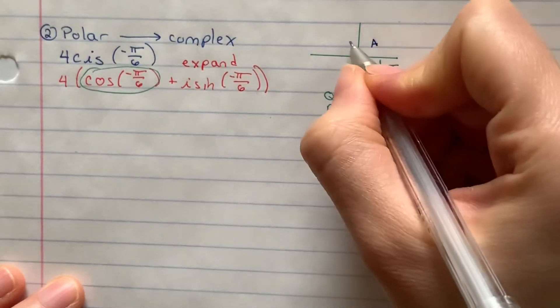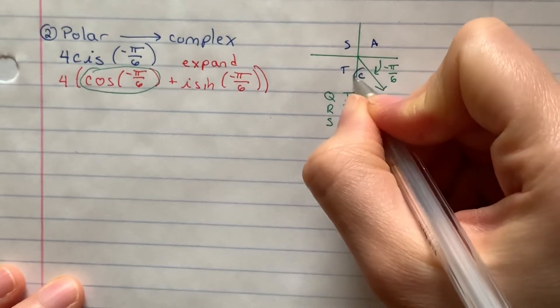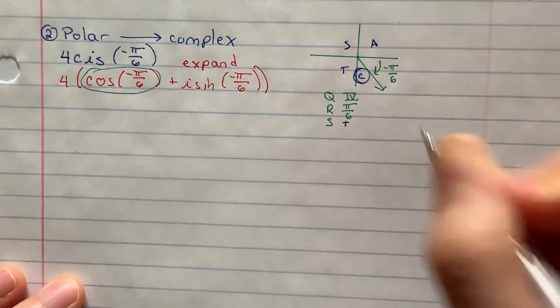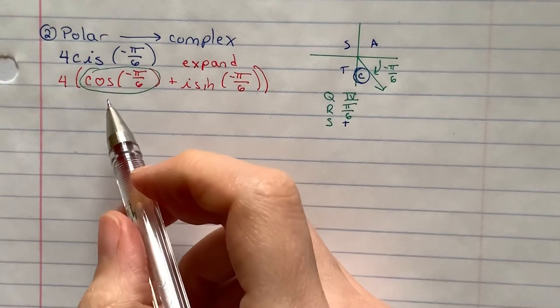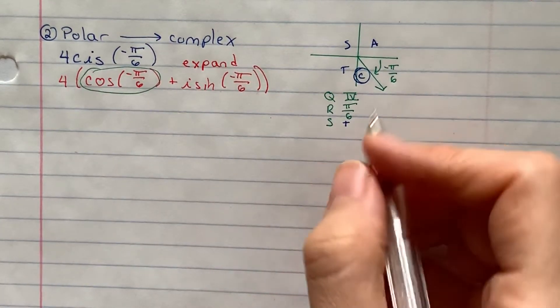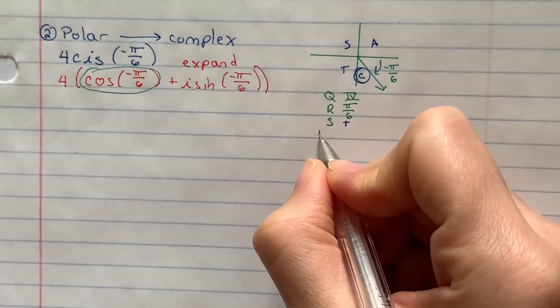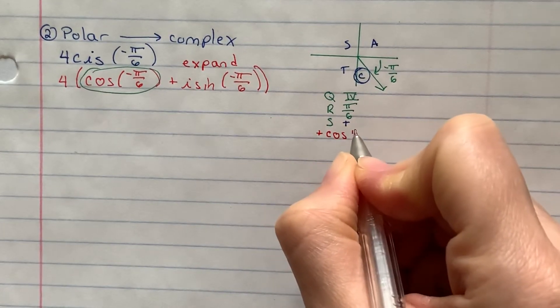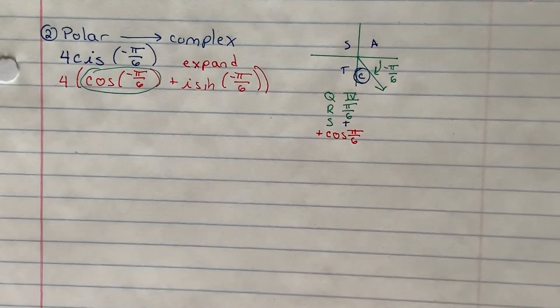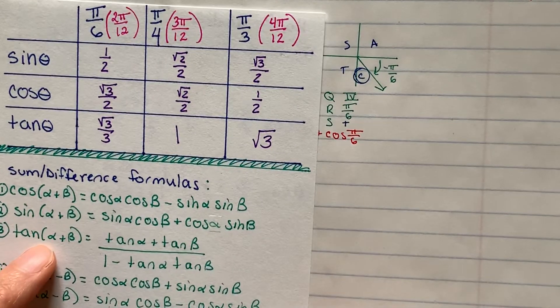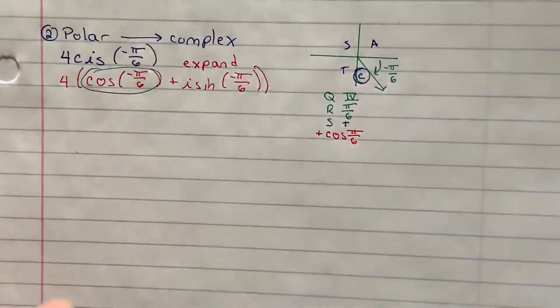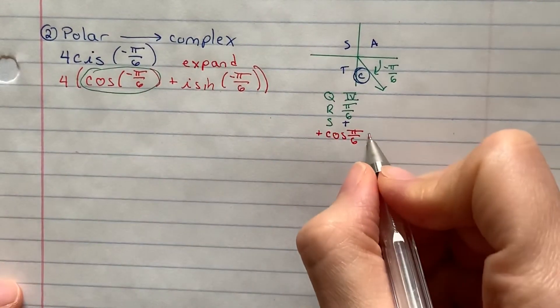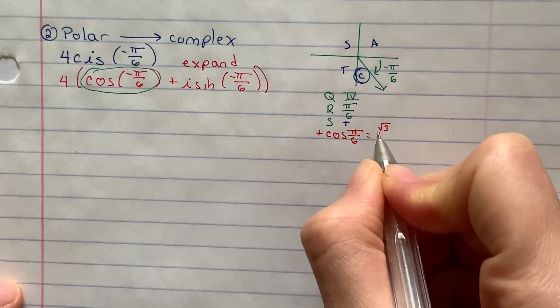And I'm dealing with cosine right now. So the cosine in quadrant 4, just again, this is all students take chemistry. Cosine in quadrant 4 is positive. So what did I just figure out? Well, the cosine of negative pi over 6 is the same thing as positive cosine pi over 6. So let me look at my chart here. What is the cosine of pi over 6? Cosine pi over 6 is radical 3 over 2. So I just figured out that the first element here...